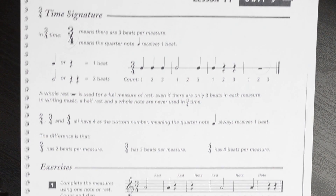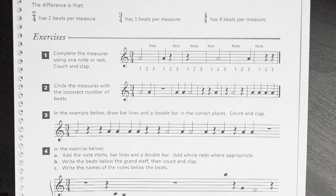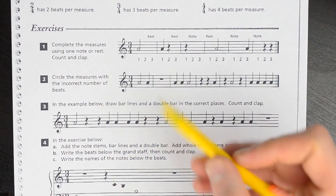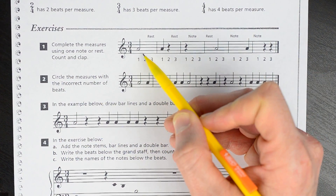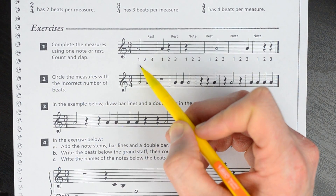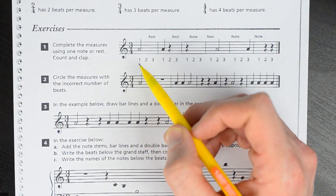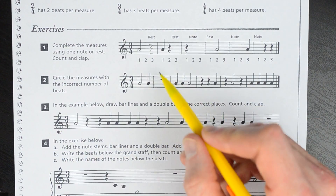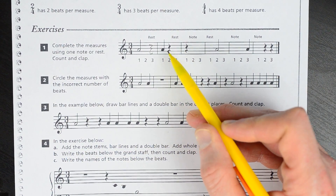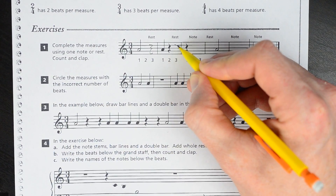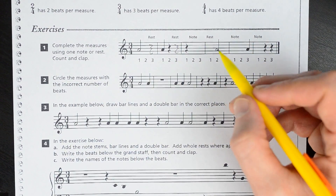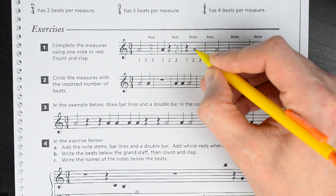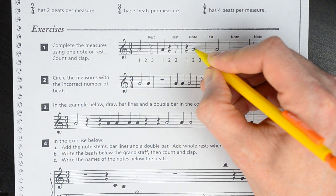Let's do exercise one: complete the measures using one note or rest, then count and clap. We're in 3/4, so I ask how many beats we already have. The first measure already has two beats, so we need one more — a quarter rest. The next measure has a quarter note and a quarter rest already, so we add one more quarter rest. The next one needs a note: one beat is taken, two remain, so we add a half note on beat two.